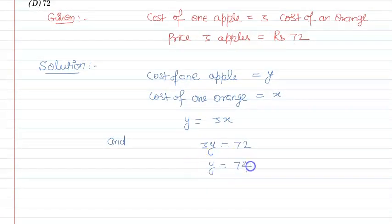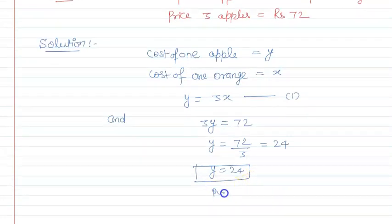So now y = 72/3 = 24. We got y = 24. Now put this in equation 1: y = 3x.